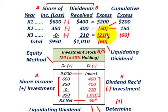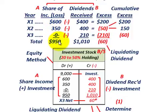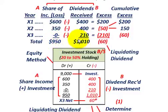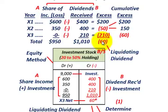Totaling the columns: share of income over three years was $950,000, and dividends received were $1,010,000. Since dividends exceeded income by $60,000, that's a negative cumulative excess — more dividends received than income earned. This is called a liquidating dividend, and we have to take it into account when recording under the fair value method.